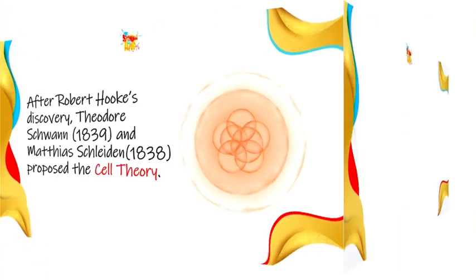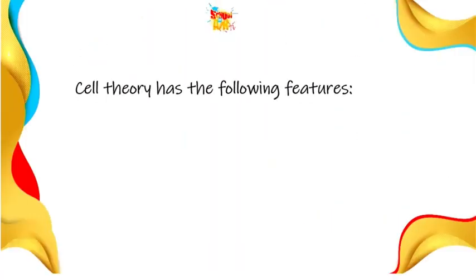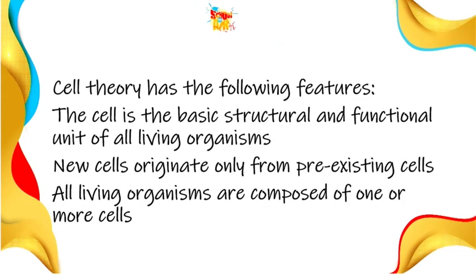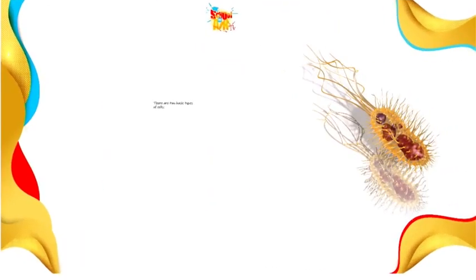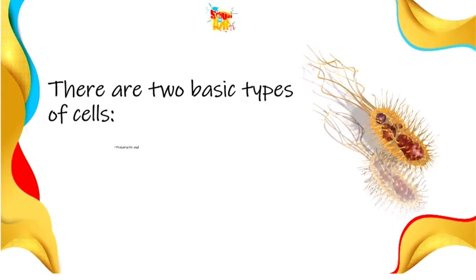After Robert Hooke's discovery, Theodor Schwann in 1839 and Matthias Schleiden in 1838 proposed the cell theory. The cell theory states: the cell is the basic structural and functional unit of all living organisms; new cells originate only from pre-existing cells. This means our bodies are built from pre-existing cells — we are formed from sperm and eggs, which are cells, making us as zygotes. All living organisms are composed of one or more cells.